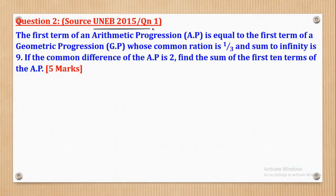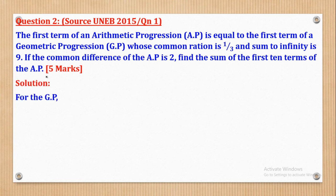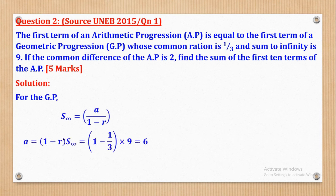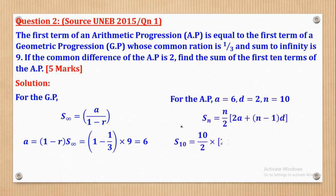Question 2 (UNEB 2015, Paper 1, Question 1): The first term of an AP equals the first term of a GP with common ratio 1/3 and sum to infinity 9. The common difference of the AP is 2. Find the sum of the first 10 terms of the AP. For the GP: S∞ = A/(1 - 1/3) = 9, so A = 6. Since the AP has the same first term, A = 6 and D = 2. Therefore S10 = 10/2 × [2(6) + 9(2)] = 150.